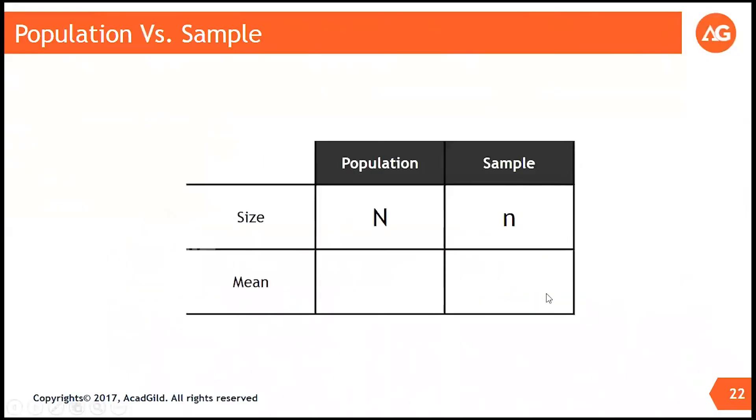So there is population mean. Population mean, it is a standard practice, is always denoted as mu. The sample mean is always denoted as x bar. So if you have to fill this table,